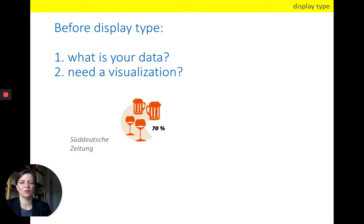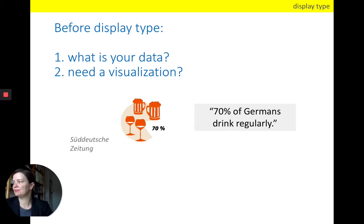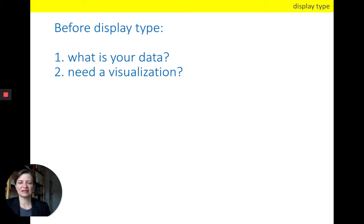So here we see one example from German daily newspaper, the Deutsche Zeitung, and what we can see here is a little thing called a pie chart which is decorated with a couple of icons and the only purpose of it says 70%, which is the number of Germans regularly drinking alcohol. So as an alternative to making a fairly large visualization, what you could also do is to simply say 70% of Germans drink regularly in a sentence. So for that kind of one number observation, you typically do not need a visualization in the first place.